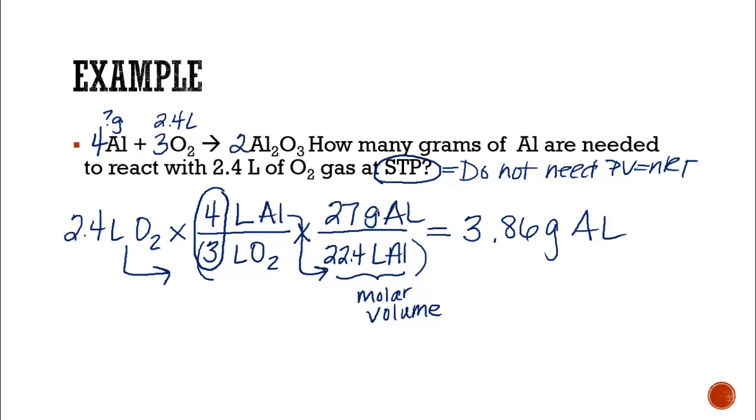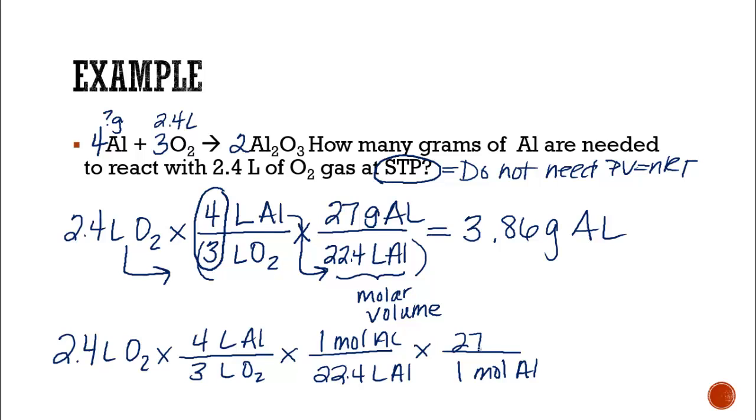Why can I go liters to grams? Well, if I broke this up, I could do it 2.4 liters of O2 times a line. I'm still doing my 3 liters of O2, 4 liters of Al times a line. Then, I can do 22.4 liters of Al to 1 mole of Al. And then, I could times a line and do 1 mole of Al to 27 grams of Al. And I'm still going to get 3.86 grams of Al. Maybe that's what you're more used to seeing. This is the molar volume. Because this is in 1 mole, and this is in 1 mole, and these two will cancel each other out, I can do the shortcut and change liters straight into grams.